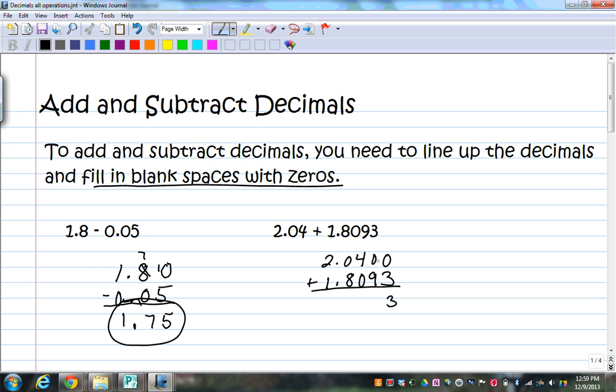0 plus 3 is 3. 0 plus 9 is 9. 4 plus 0 is 4. 8 plus 0 is 8. Decimals straight down. 2 plus 1 is 3. So my answer is 3.8493. Let's move on to multiplication.